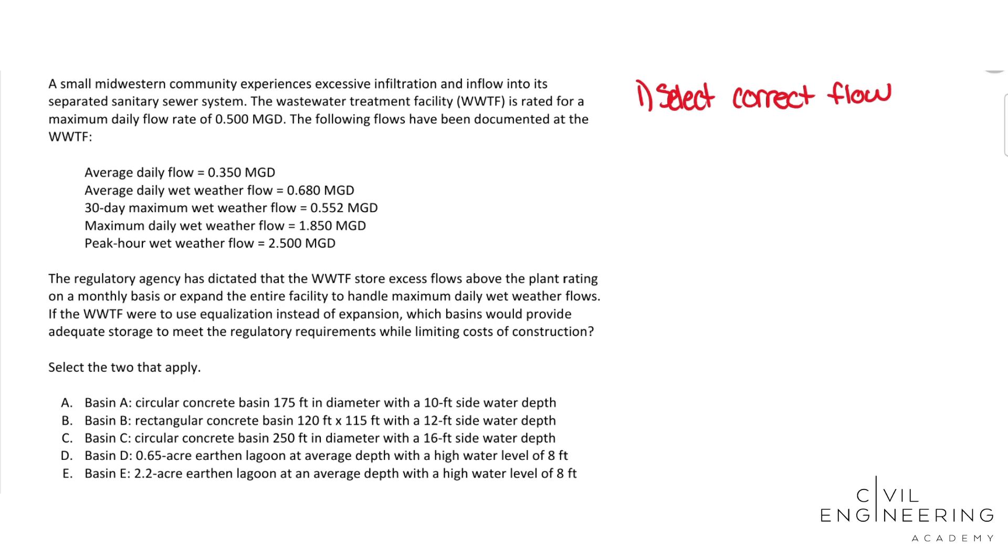We want to use equalization, so storage, storing excess flow above the plant rating on a monthly basis. So an average daily flow is not going to work because that's not on a monthly basis. 30-day maximum wet weather flow, that's a month. Maximum daily wet weather flow, that's not going to work. And peak hour wet weather flow also won't work. So we are going to use this flow rate, and we want to store the excess above the plant rating.